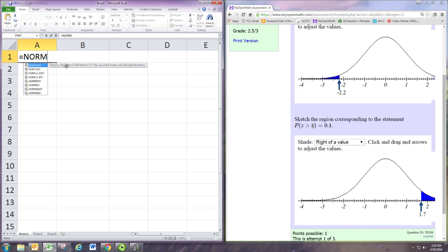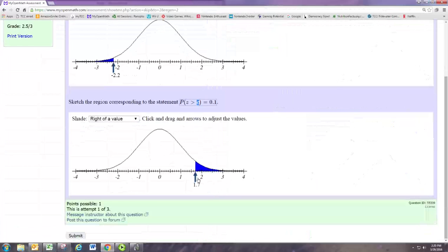So this will use the norm inverse feature and the area to the left is 0.9, and this is the standard normal distribution so the mean is 0 and the standard deviation is 1. So we want it at about 1.3 and that should do it.